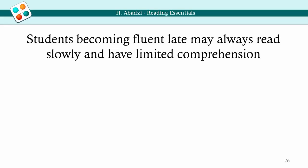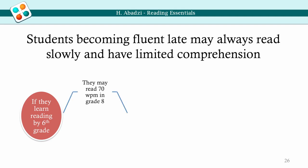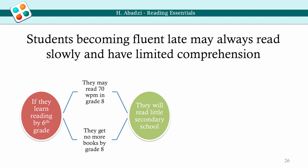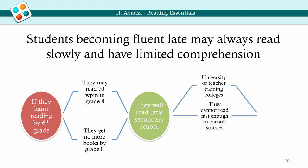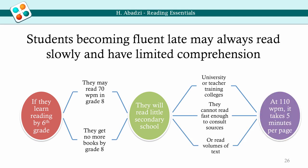Unfortunately, students who become fluent late may always read slowly and have limited comprehension. For example, if students finally learn reading in grade 6, they may read only 70 words per minute in grade 8. They may get no books in secondary school, so speed will not increase much. If they get to university or teacher training colleges, they may be unable to consult complex reference texts. At 110 words per minute, it takes about 5 minutes to get through a page.